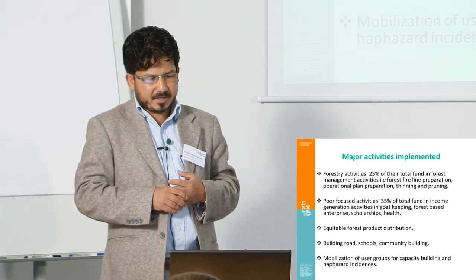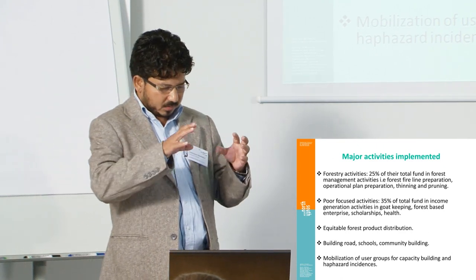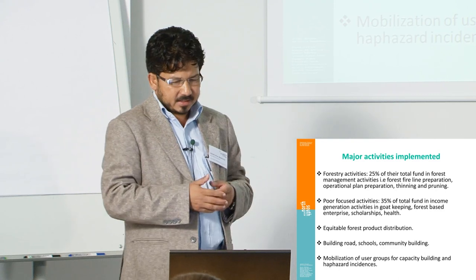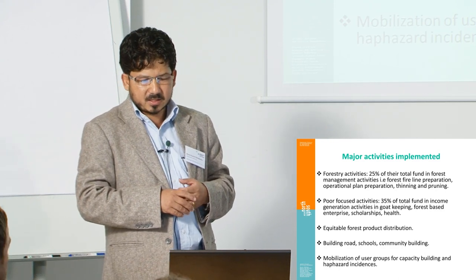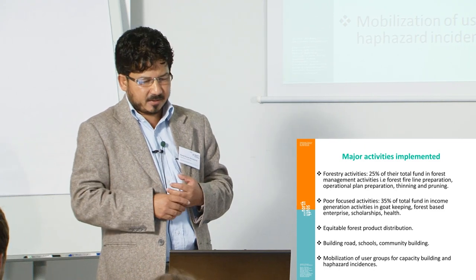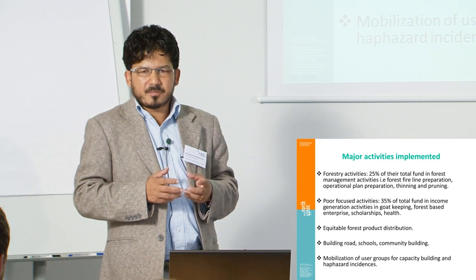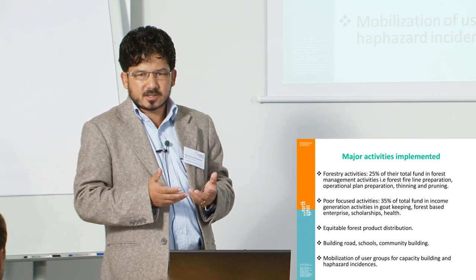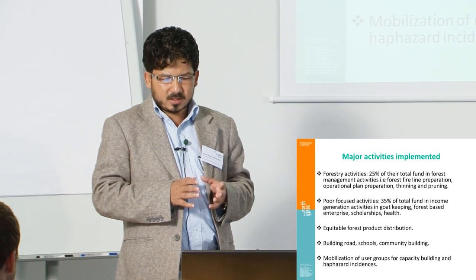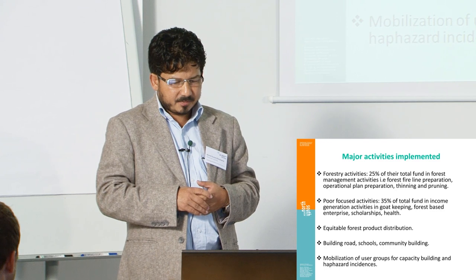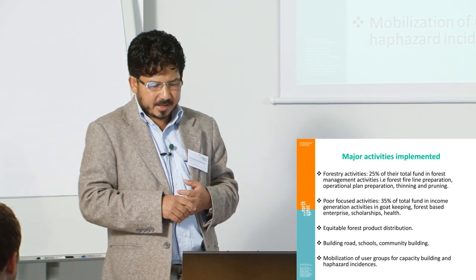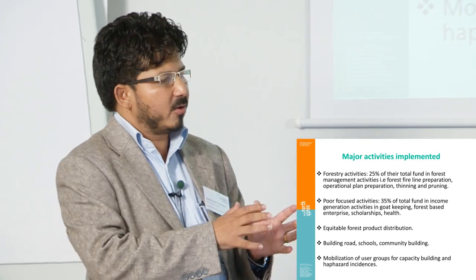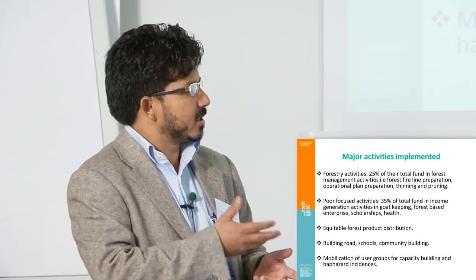Regarding major activities implemented: through community forestry funds, they spend at least 25% of total funds on forest management activities — forest fire line preparation, operational plan preparation, thinning and cleaning. At least 35% of total funds are spent on poor-focused activities like forest-based enterprises, scholarships, health programs, equitable distribution systems, building roads, schools, and community buildings. They also mobilize user groups for capacity building and allocate emergency funds for hazard incidents.